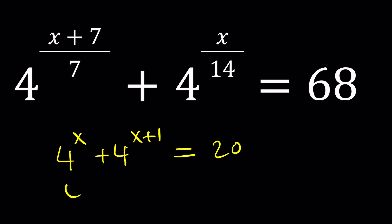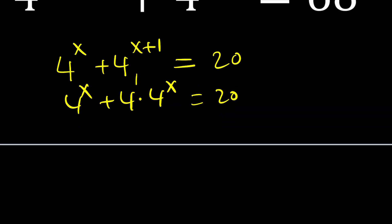I can go ahead and write this as 4 to the x plus 4 times 4 to the x, because 4 to the power 1 is equal to 4 and then this becomes 20. Now I can go ahead and either factor 4 to the power x out or I can call that something and use substitution. Let's go ahead and factor out 4 to the power x. That gives us 1 plus 4 equals 20.